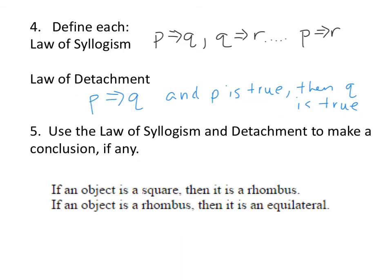Make sure that you know the law of syllogism and law of detachment. So I wrote out the law of syllogism. The law of detachment is if you know P implies Q is true, and P is true, then Q is true. If you know that P implies Q is true, you can't say that just because Q is true, P is true. Make sure you know the definitions of each.